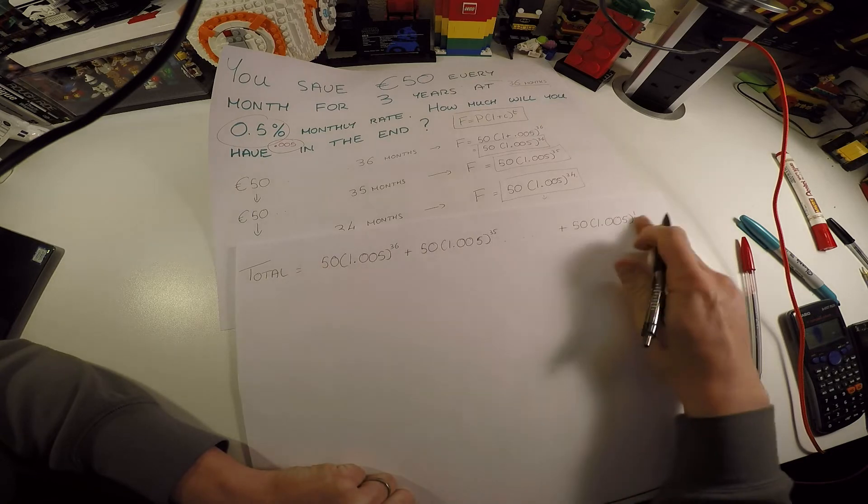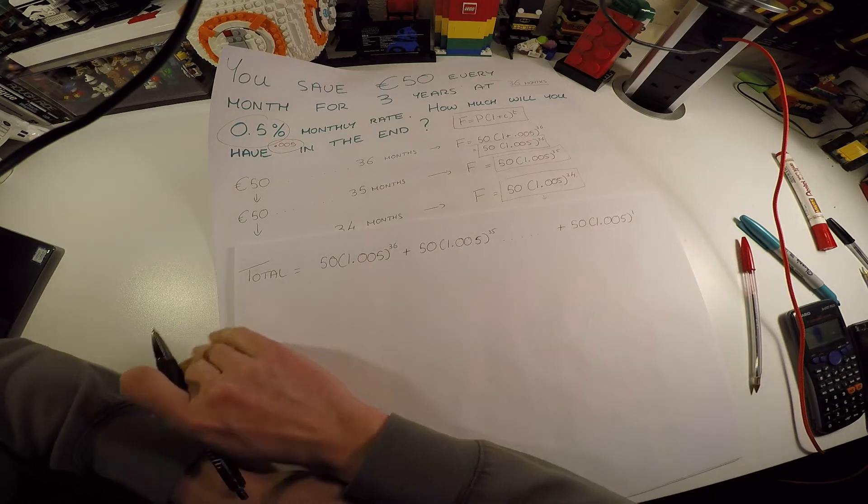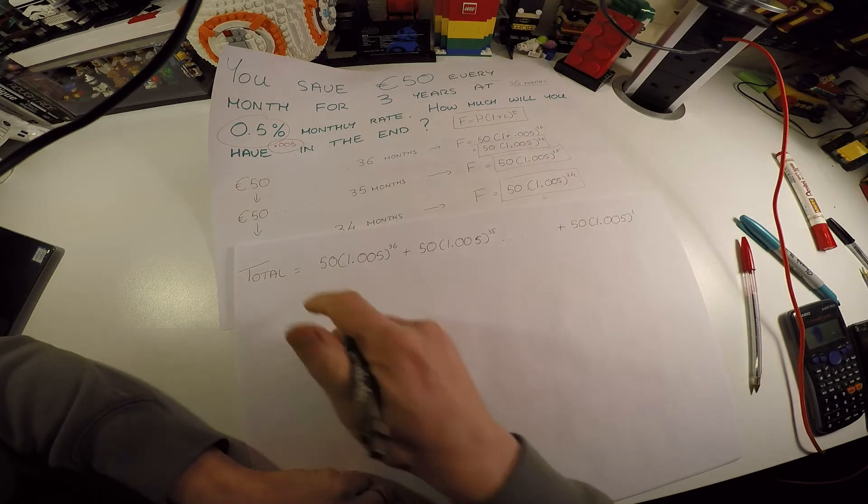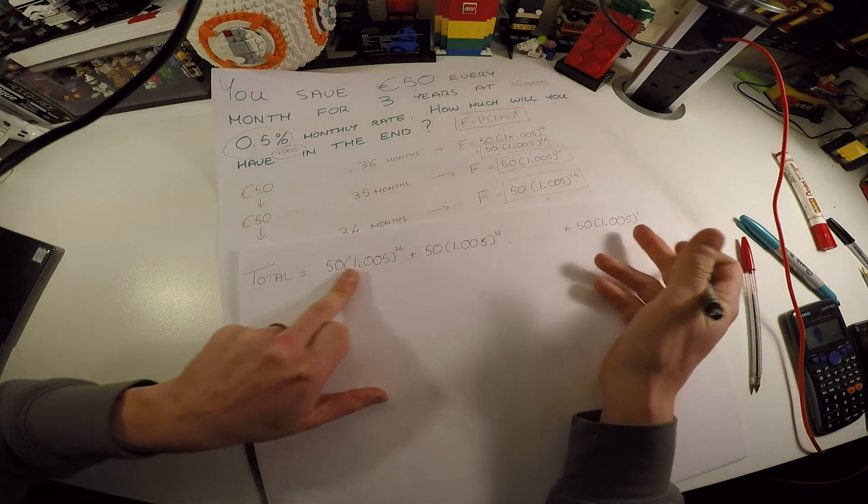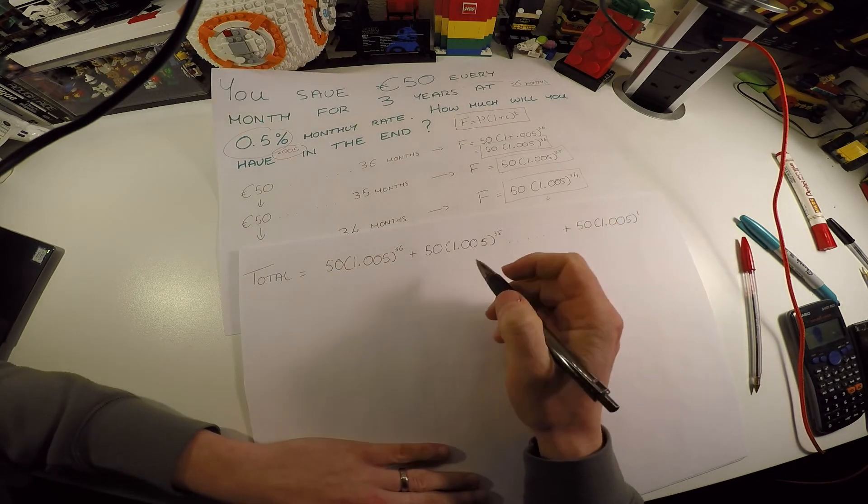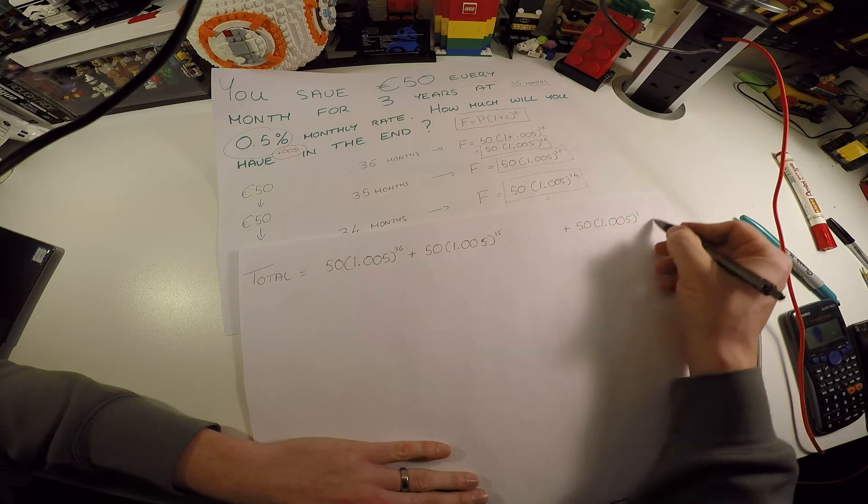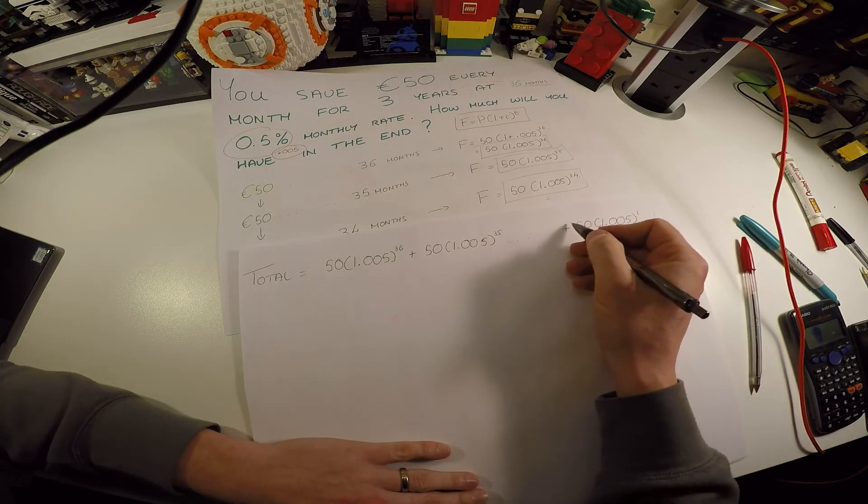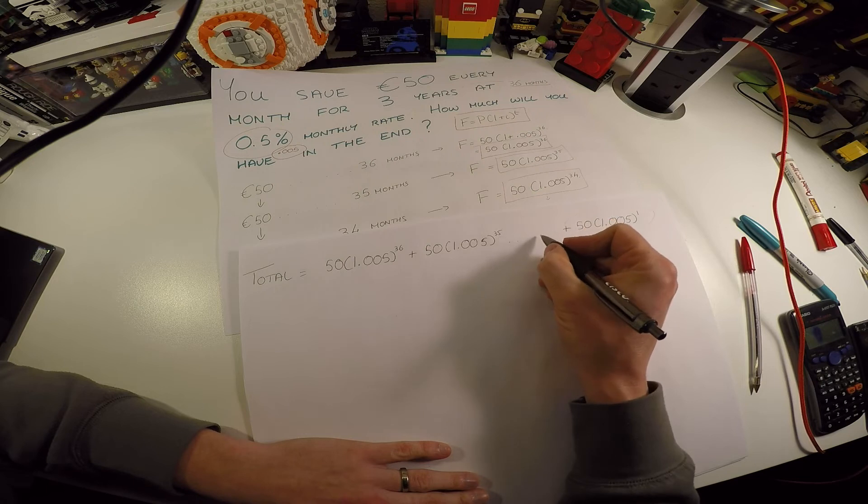So if we have something like this, our total is going to be equal to the first payment on its own little journey. Now we need to spot the sequence here, but addition is commutative, so it doesn't matter which way we write it. Like 4 plus 2 is the same as 2 plus 4.